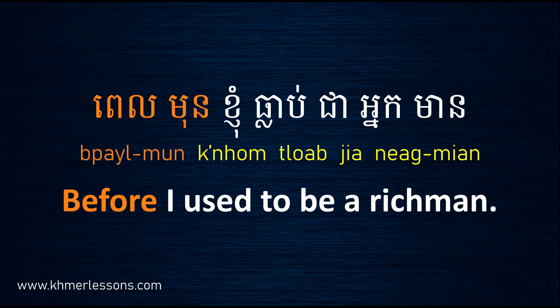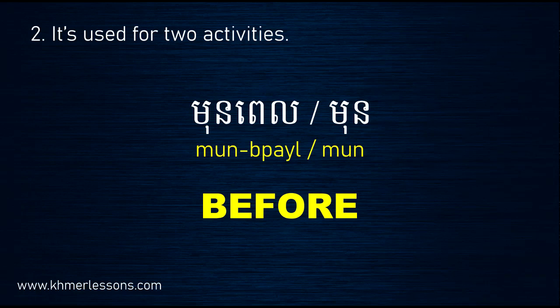I hope you understand clearly about the first point. Now go to number two: when you use 'before' for two activities. In this case you can use 'Munn Perl' — you see it's different from the first one where you say 'Pêl Môn.' For this point you say 'Munn Perl,' or just the short form 'Munn.' Both are correct. So for point number two, you say 'Munn,' 'Munn Perl,' or just 'Munn' for two activities.